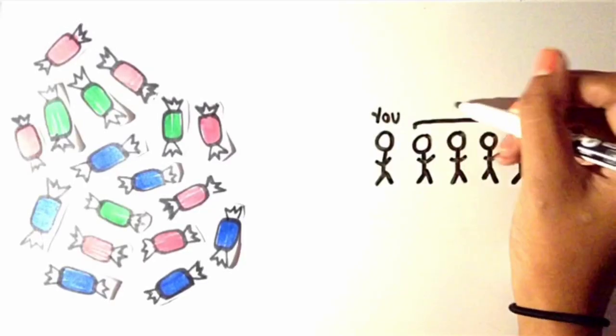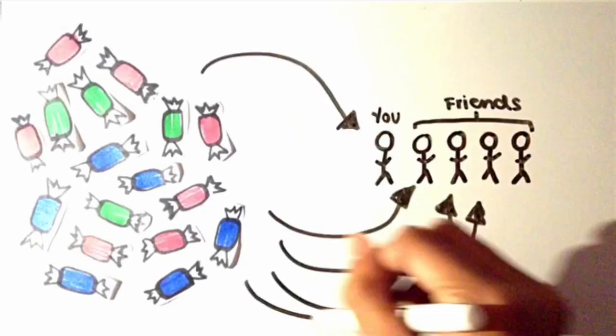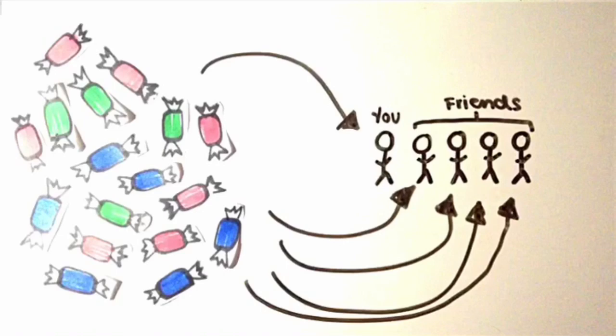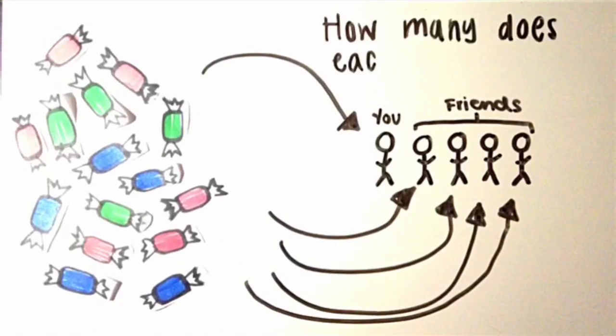Let's try using a variable. Say you have 17 Jolly Ranchers to distribute between you and your four friends. You get hungry on the way, so you eat two.